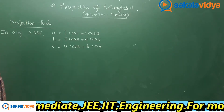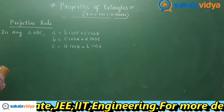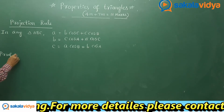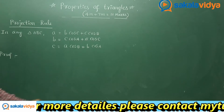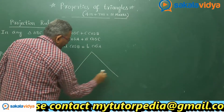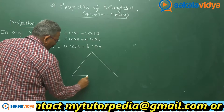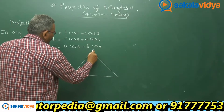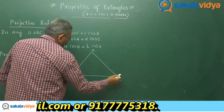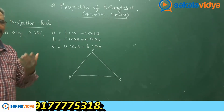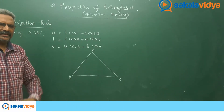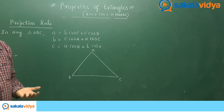You have to remember these. So let us have a proof. Consider any triangle ABC. It may be an acute triangle, obtuse triangle, or right angle triangle — the rule holds good. It is better to take an acute angle triangle.